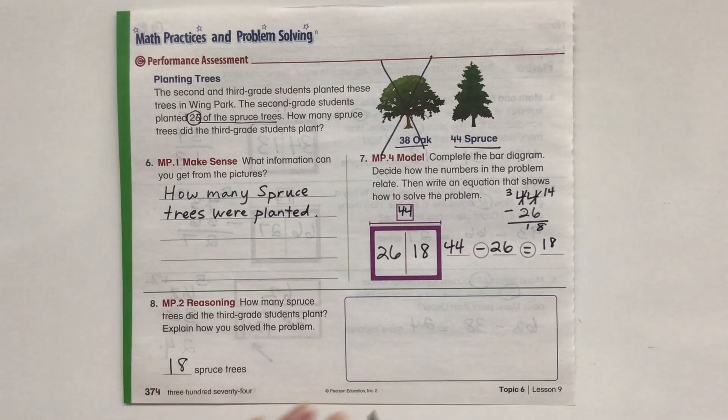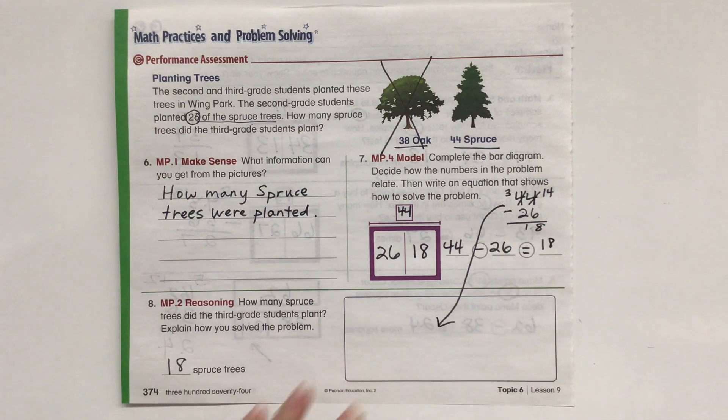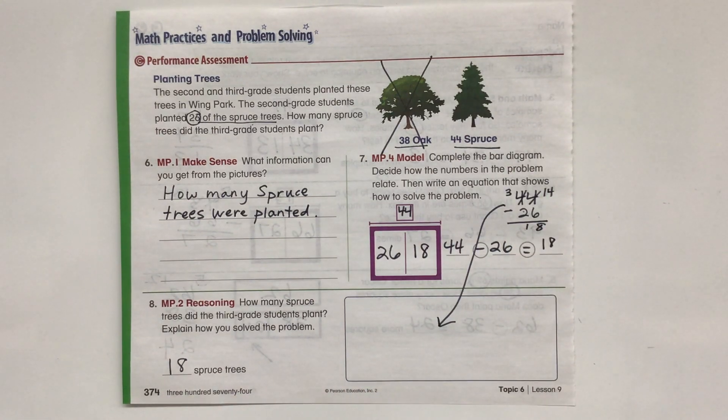So we know that the third graders planted 18 of those spruce trees. So how many spruce trees did they plant? 18. Explain how you solved the problem. I'm just going to draw a picture here, and that shows exactly how I did it. All right, great job, everybody.